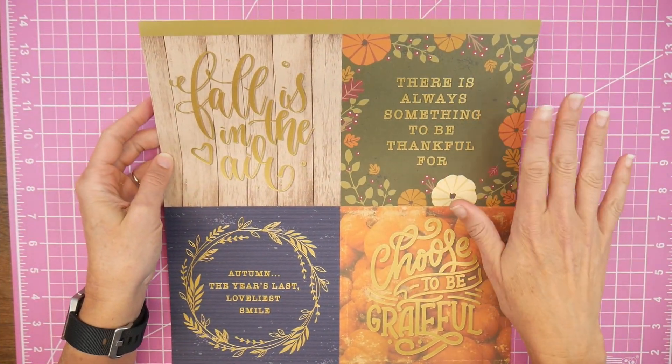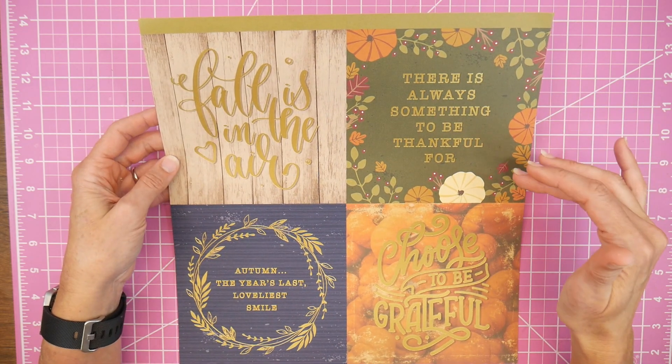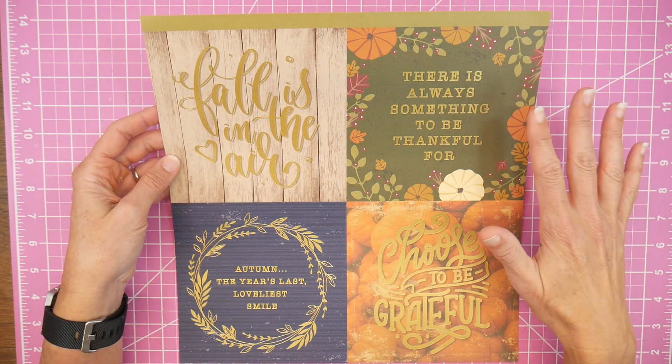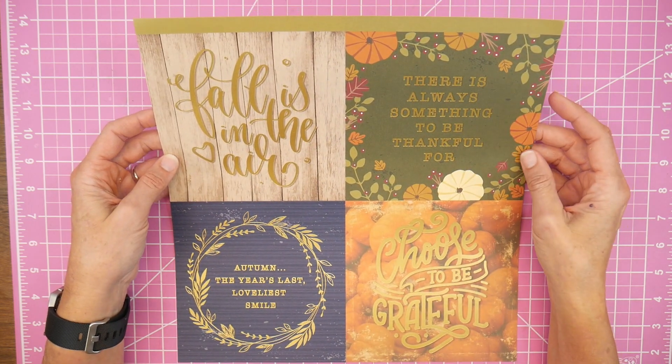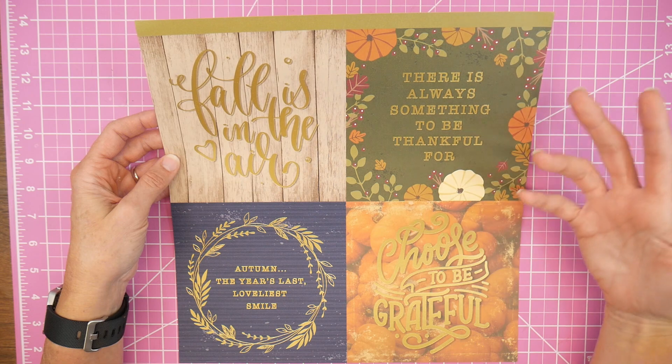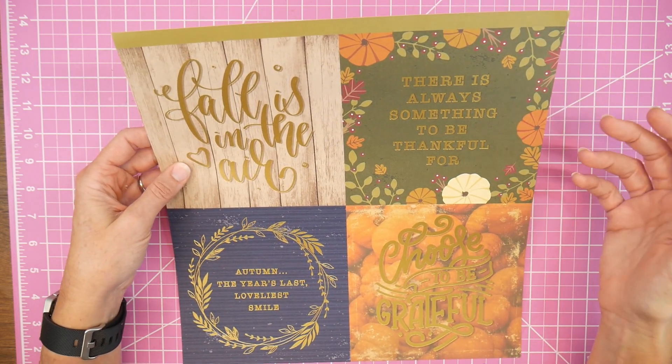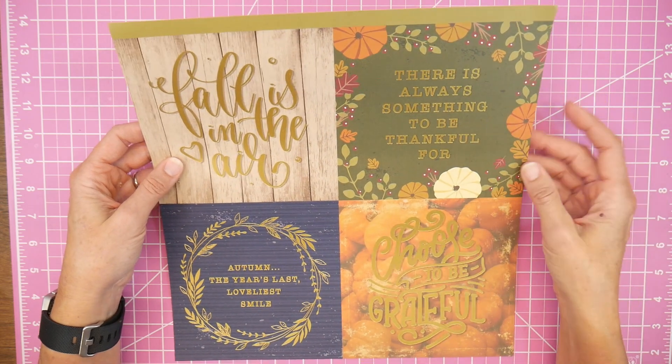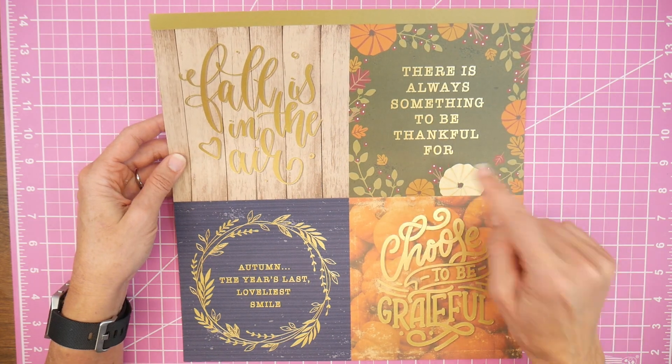Are you unsure about what to do with some of these cut-apart pages that might be in your 12x12 paper pads? These are 6x6 cut-aparts. Sometimes, if you're a card maker, they're too big for cards unless you're doing a 6x6 card, and they don't always work as titles. So what can you do with these types of cut-aparts? I have some different ideas for you if you stay tuned.